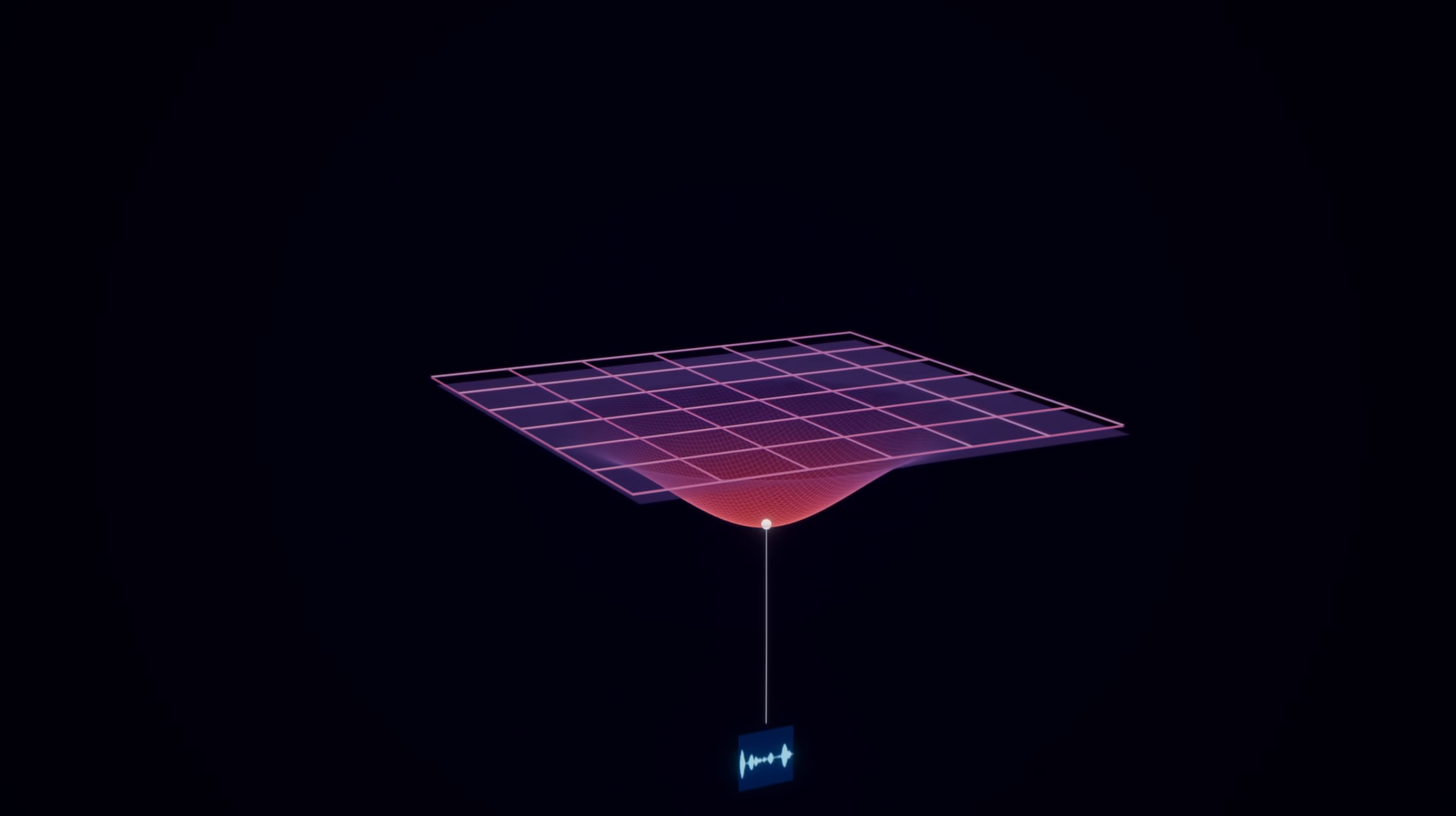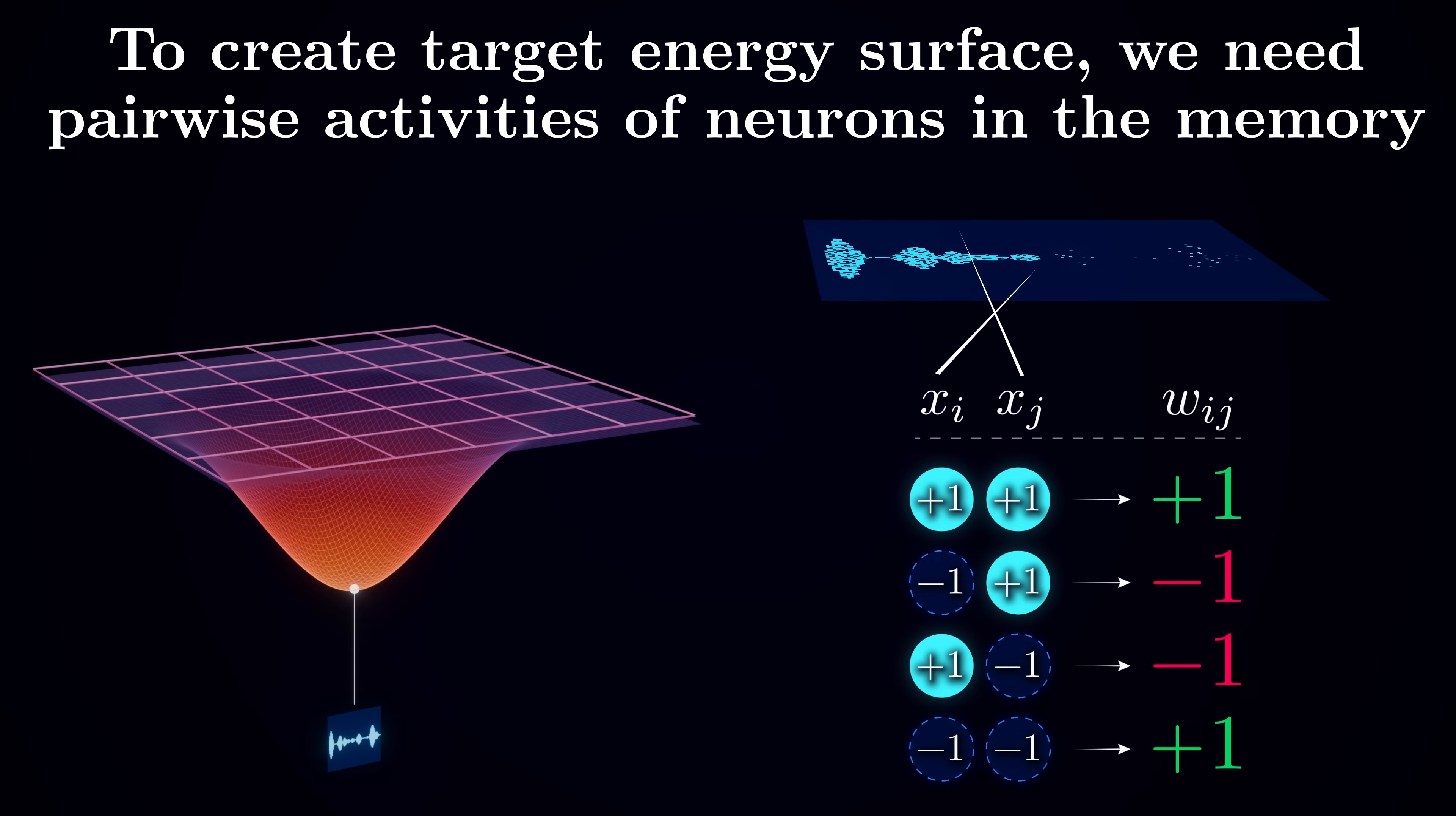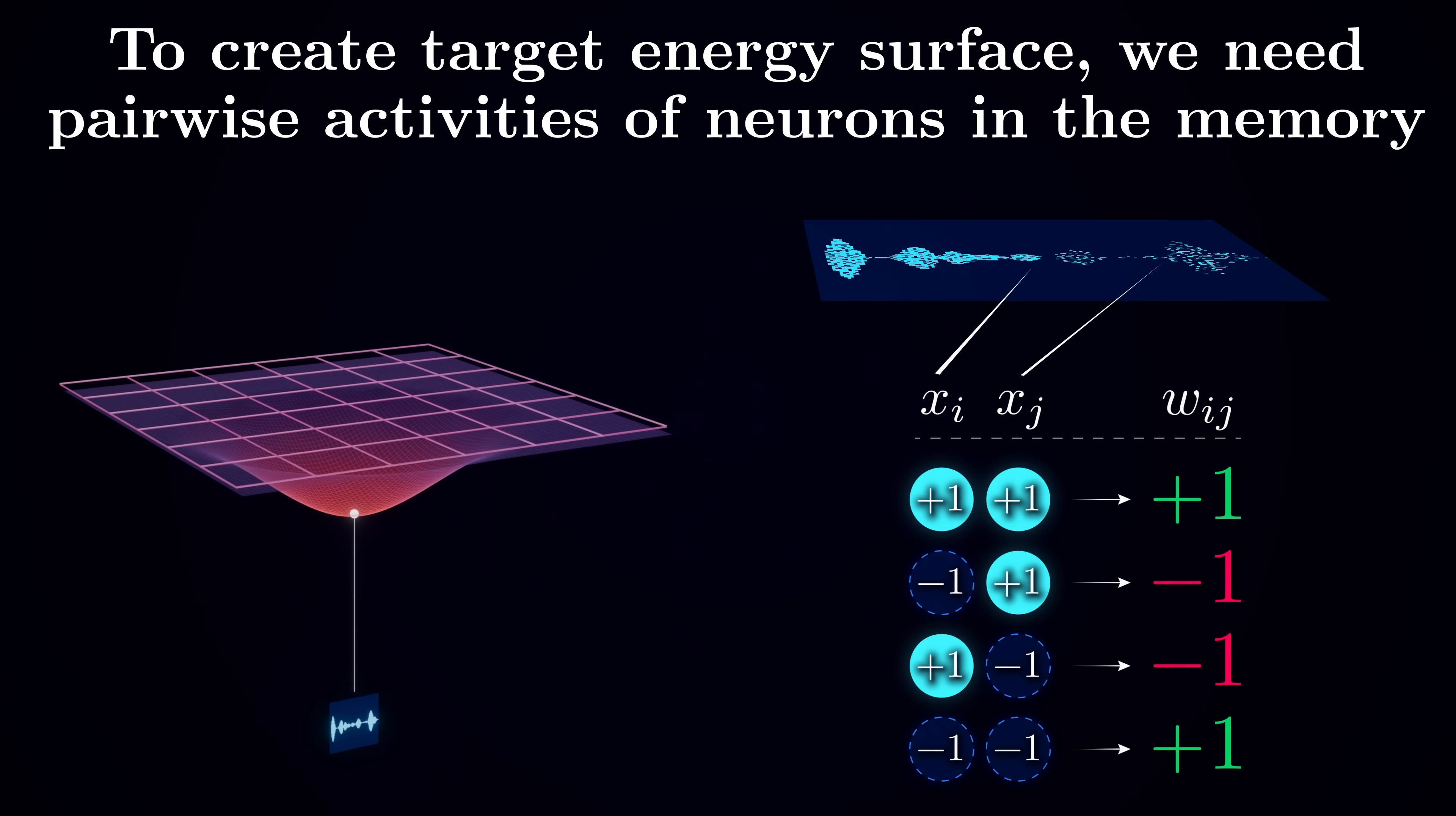I want to reiterate the crucial point here. If we want to come up with a set of weights that would dig an energy well around some pattern, then all we need to know are the pairwise relationships between states in that pattern. If the two neurons are active together in the source memory, strengthening the connection between them lowers the Hopfield energy of that memory, effectively storing it in the weights for associative recall.